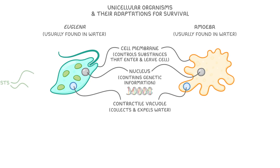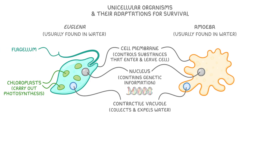First up, euglena cells have chloroplasts, because like plants, they're able to carry out photosynthesis and make their own food. Additionally, they've also got a whip-like tail called a flagellum, which allows them to move around their watery environment. This is especially useful because it means they can move towards light, which is needed for photosynthesis.